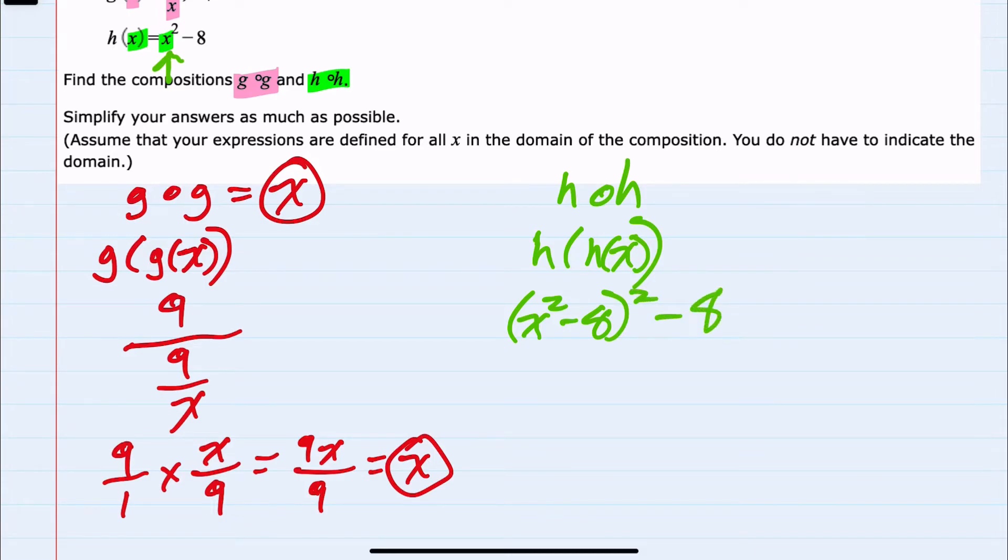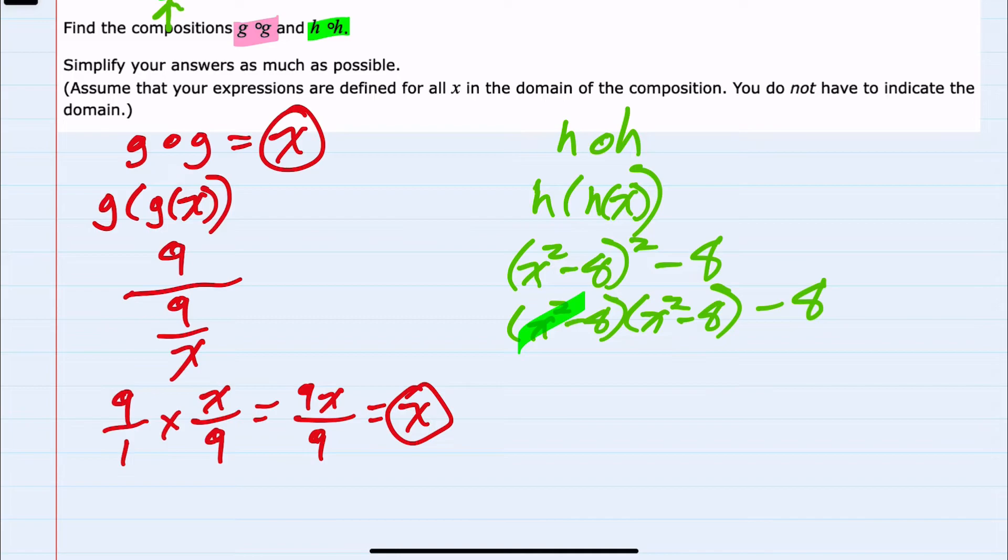So we would start by squaring the x squared minus 8. If it's helpful, we can write this out as x squared minus 8 times x squared minus 8. That would be the x squared minus 8 squared, and then minus 8. Now multiplying, x squared times x squared is x to the fourth. X squared times minus 8 is minus 8x squared. On the inside, multiplying by minus 8, minus 8 times x squared is minus 8x squared. Minus 8 times minus 8 is plus 64. And then make sure that we bring down that minus 8 on the outside.